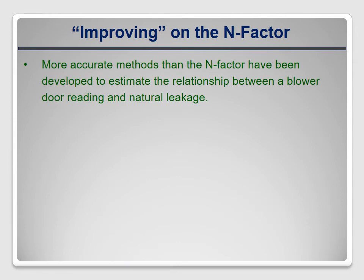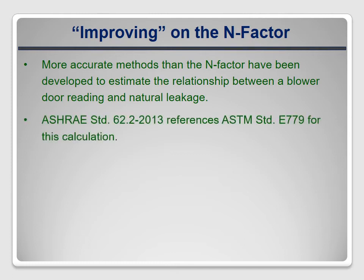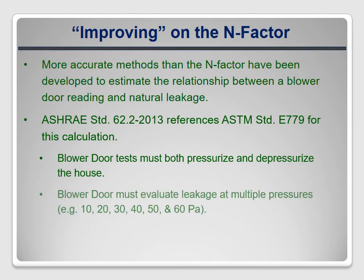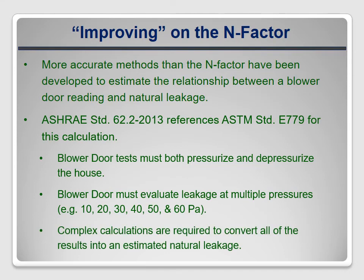ASHRAE 62.2 2013 references the calculation methods in ASTM standard E779. The blower door test must be done in both pressurization and depressurization, and it must be a multi-point test ranging from 10 to 60 pascals. All of that data must be crunched down to get a single number estimating the effective leakage area of the house. The sample calculations take up four pages in ASTM 779 — that's more work than can be justified on each house, not to mention the challenge of making sure each auditor knows how to do it all correctly.